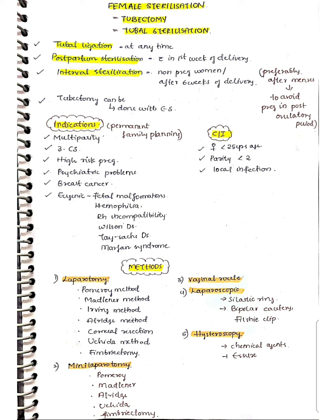Contraindications include young females less than 25 years of age, parity less than two, and any local infection present — these are contraindications for female sterilization.